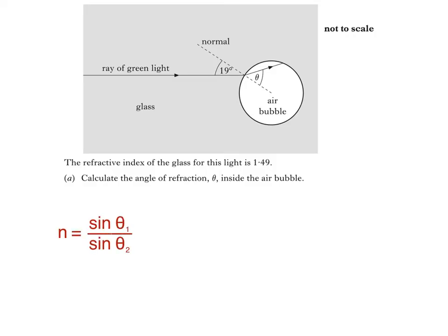Now technically, the absolute refractive index n of a medium is calculated by dividing the sine of the angle in a vacuum by the sine of the angle in the medium. Although in practice we use the angle in air as theta 1.